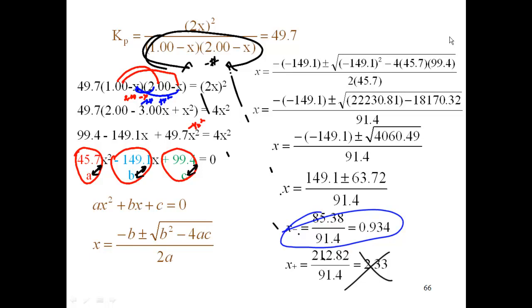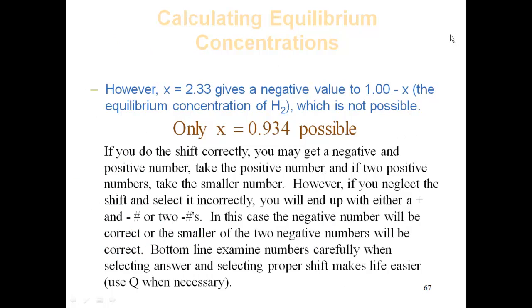One of them will be realistic. One of them will not be realistic. Now, if you choose the proper shift when you're working these problems, it's going to make your choice a little easier. So X equal to 2.33 gives a negative value to 1 minus X. Therefore, that's not possible. So the only possible answer is 0.934.